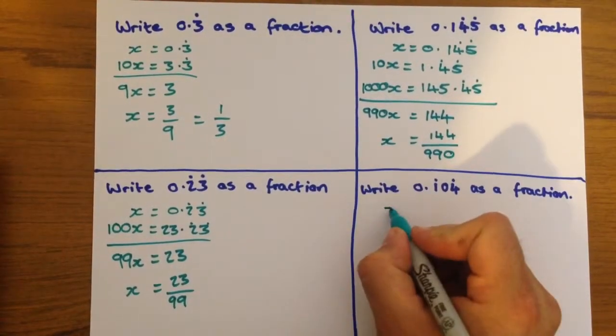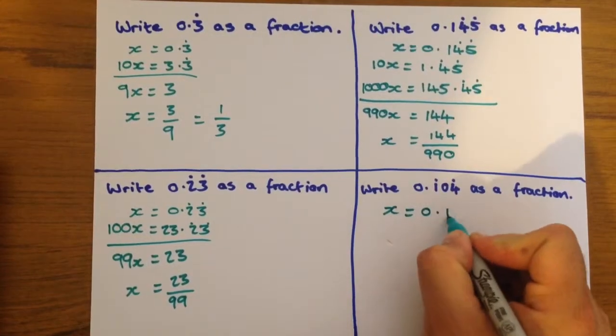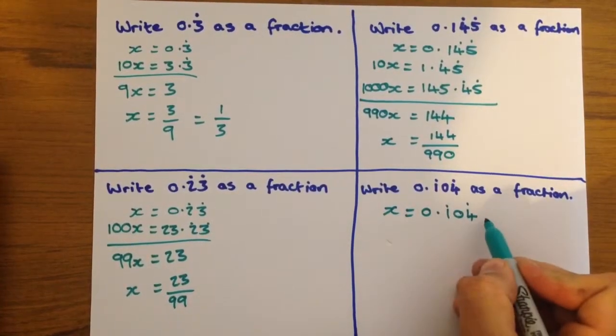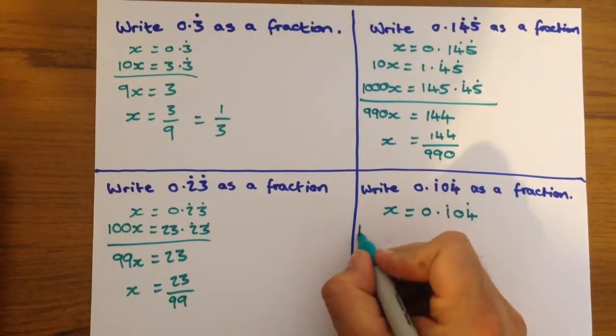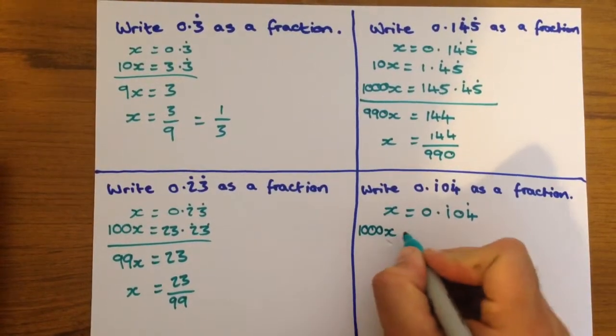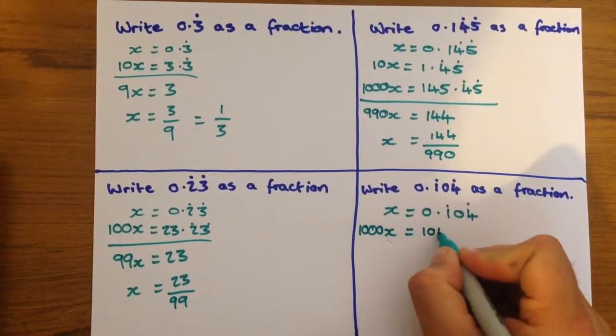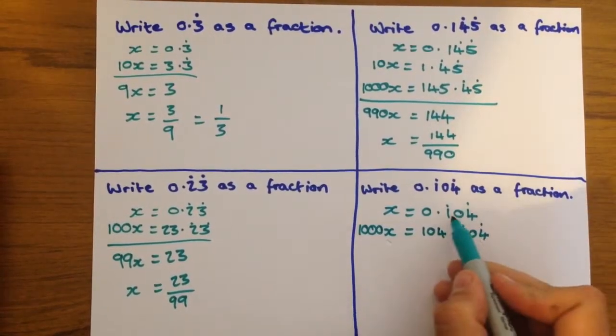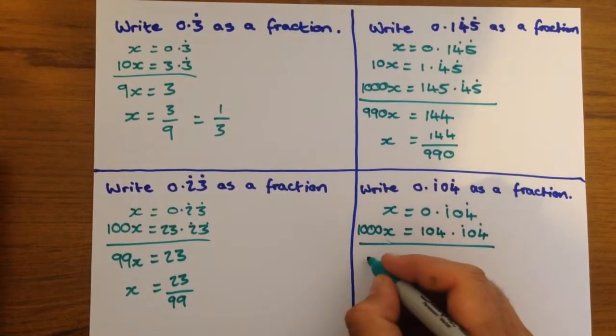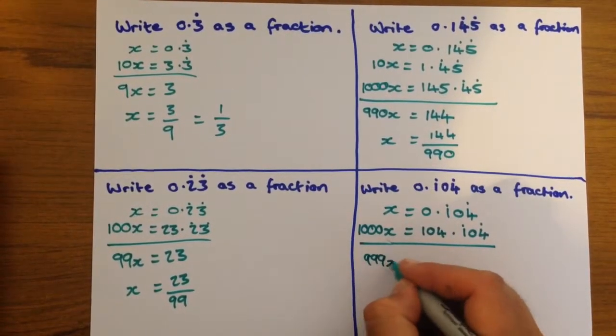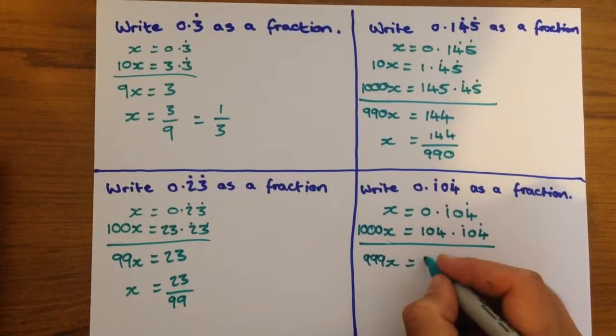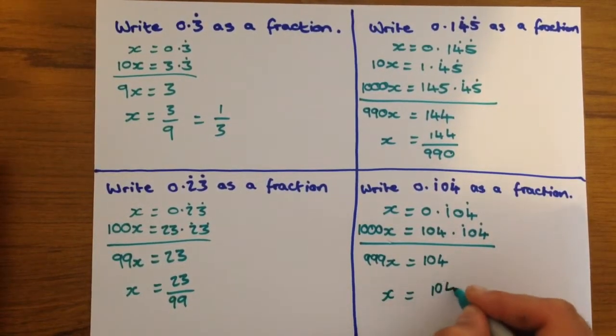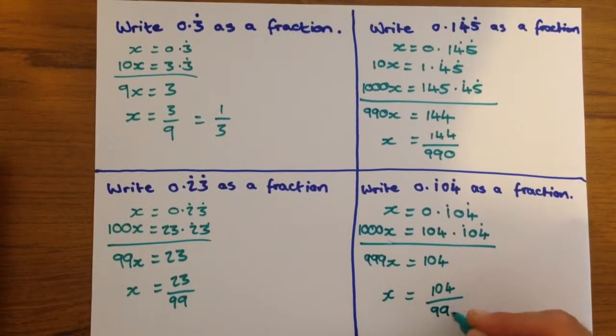This one will start by saying x equals 0.104 recurring. Again, we need to move the decimal point to the end, so we've got 1000x, because it moved three decimal places, is 104.104 recurring. Now, we've got two numbers ending in the same thing, so we subtract them. We've got 999x equals 104, x equals 104 over 999.